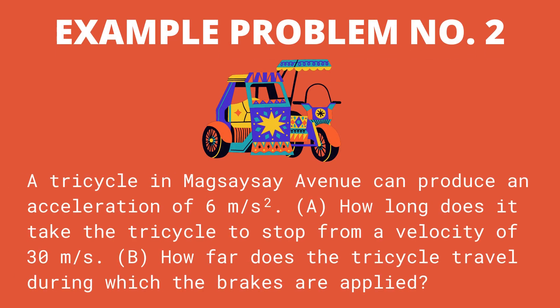A tricycle in Magsaysay Avenue can produce an acceleration of 6 meter per second squared. Letter A, how long does it take the tricycle to stop from a velocity of 30 meter per second? Letter B, how far does the tricycle travel during which the brakes are applied?